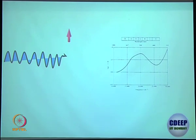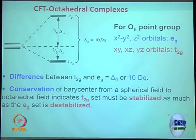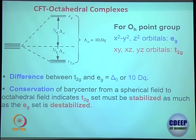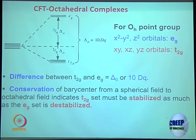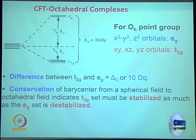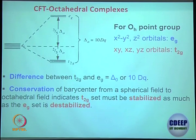For a d1 electronic configuration, one electron is in T2g¹. All three T2g orbitals are degenerate, so the only way it can go is up to Eg. If Eg is split further — into dx²-y² and dz² — the electron can go to two different levels, so you can expect two different peaks, though intensity depends on symmetry and other factors. You can sense where the spectrum comes from and which orbital the electron is moving from and to.